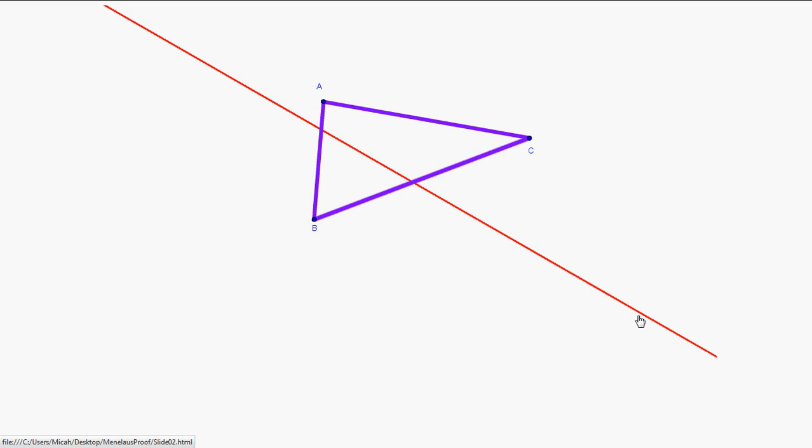Now, you may be looking at this diagram and thinking, how on earth can we reasonably talk about this red line intersecting all three sides of this triangle? Well, we do accept that we may have to extend one or more sides of the triangle to make this happen.